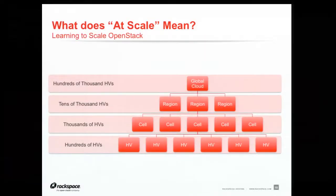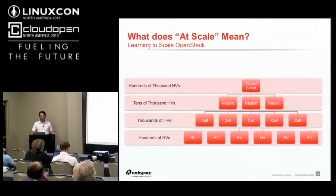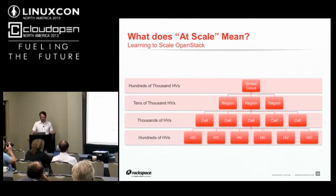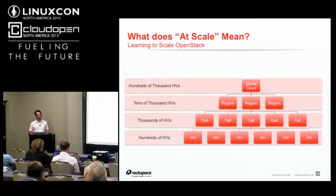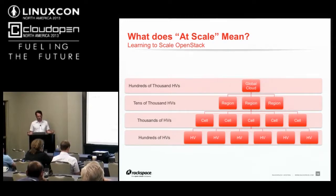One thing I learned coming to Rackspace: I grew up in small startups where scale meant a couple hundred machines. Rackspace changed my version of scale. When we came together and really wanted to build OpenStack and didn't want to do this again, we set our internal goal at a million hypervisors. As a global cloud, we want to be able to manage hundreds of thousands of hypervisors.